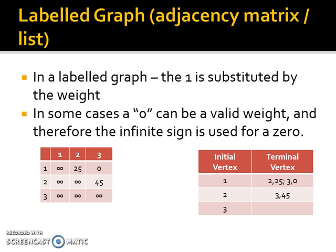these will be slightly different because in some cases we can use zero. There could be no weights. There could be no friends, no distance, no time to get between it. So zero could be an actual valid weight. Therefore we use the infinity sign where there is not a connection. So with a weighted graph, here is the matrix and here is the adjacency list.